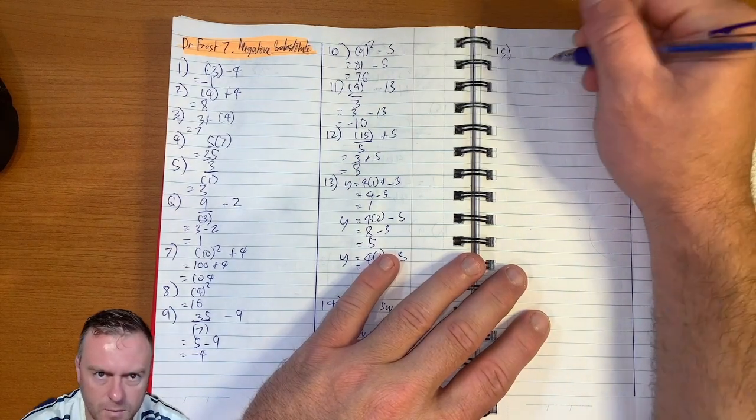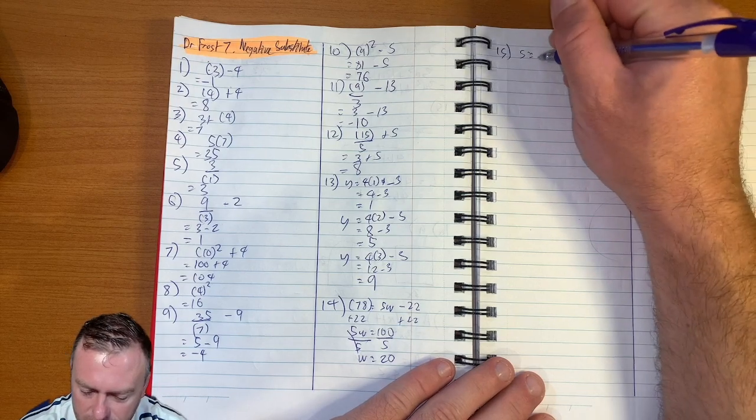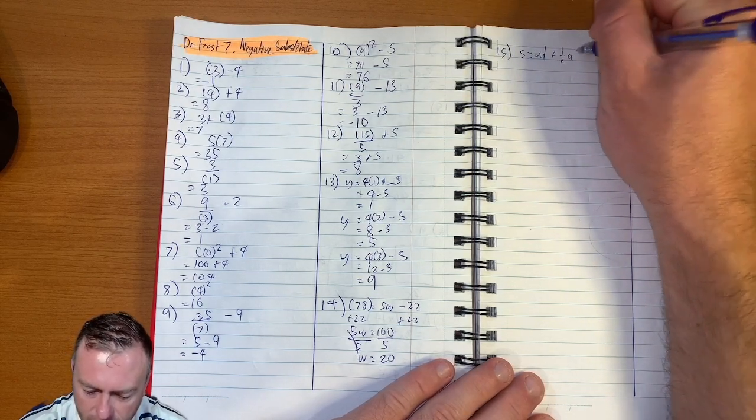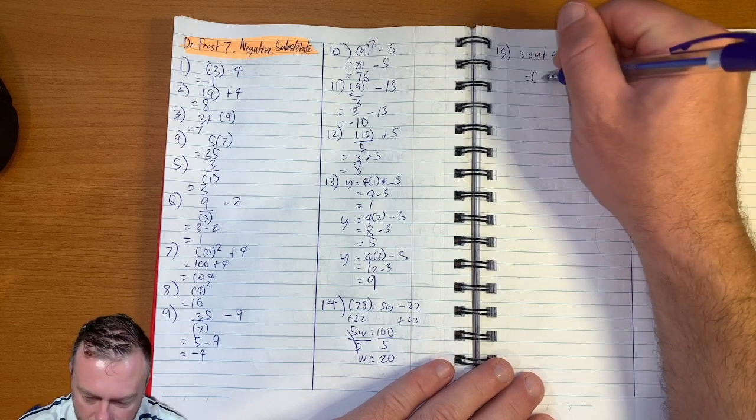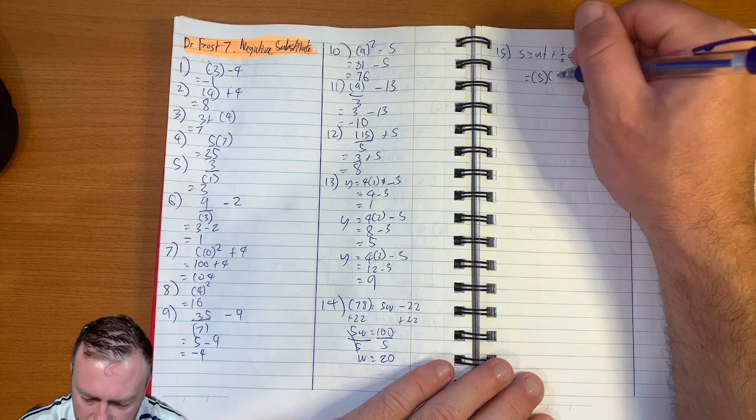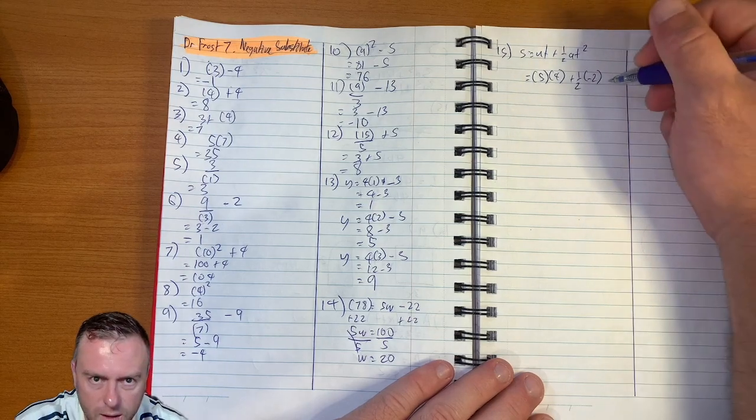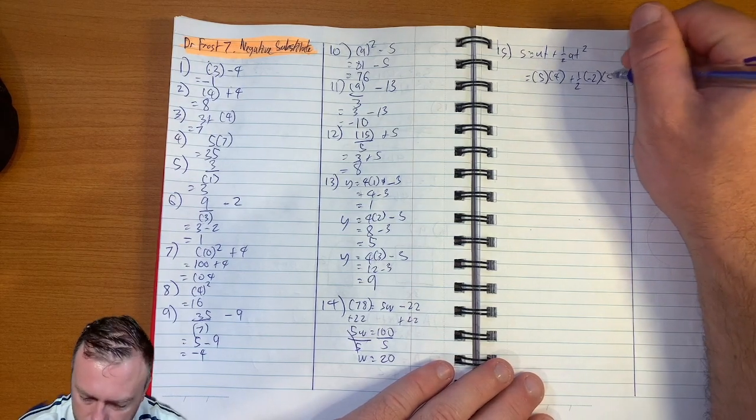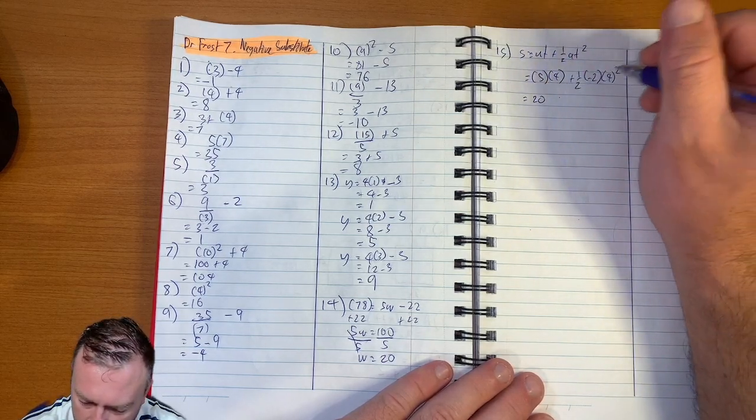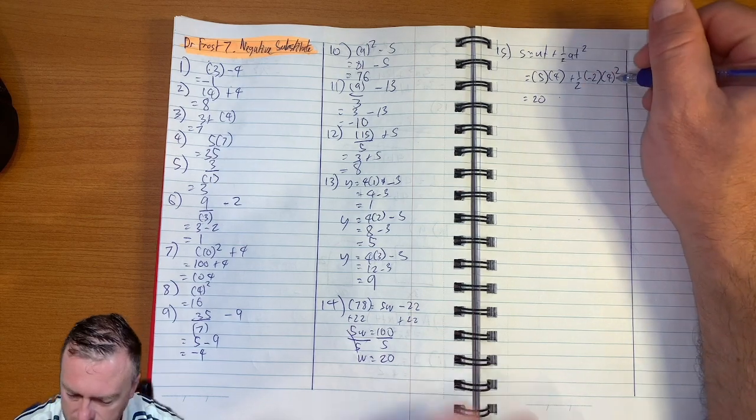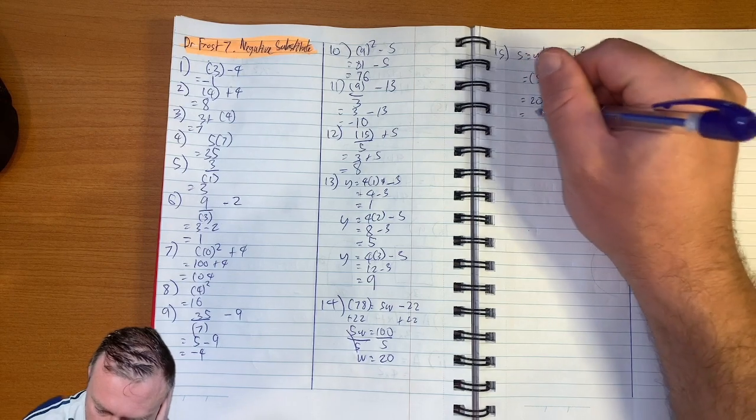Fifteen. So this is the displacement formula. So s equals ut plus a half at squared. So s equals five times the time, which is four, plus a half, negative two. It's four squared. So it equals twenty. Four squared is sixteen. It's negative sixteen. So it equals four.